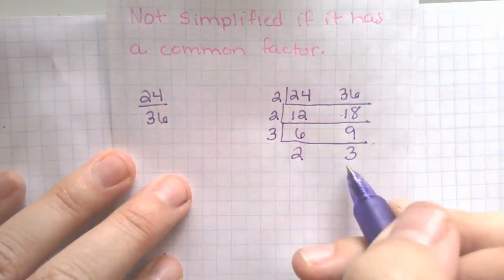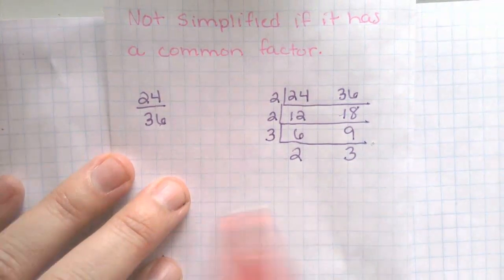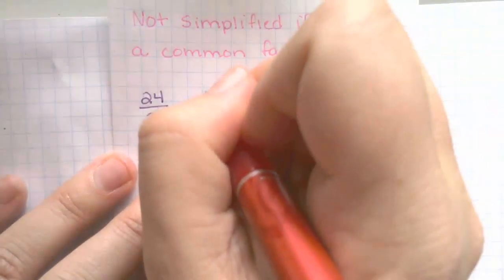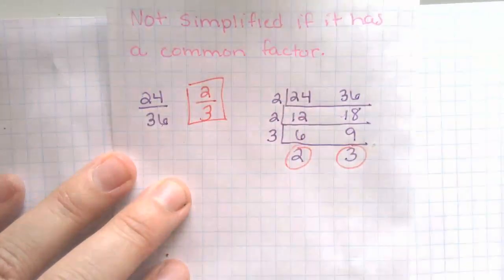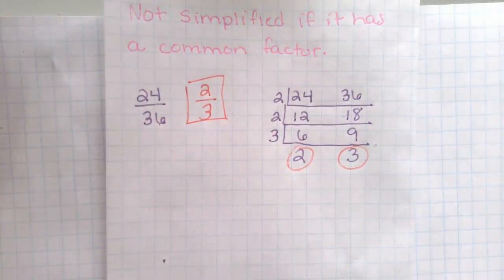Now we no longer share a common factor. So these two numbers become my numerator and my denominator. You're simplifying fractions.